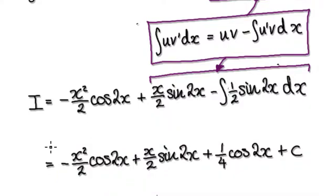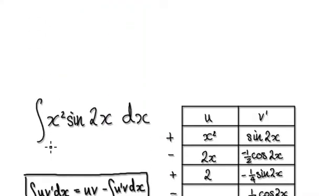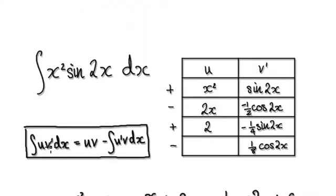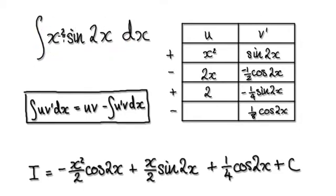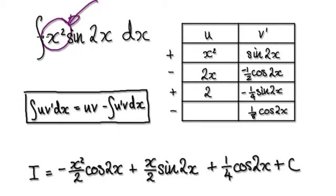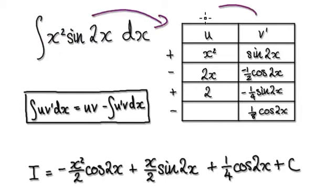But here's a more efficient way of doing it. When you are trying to integrate this, you should realize that because of this part here, you would need to apply the integration by parts process twice. So because you need to do it more than once, jump to this table here.